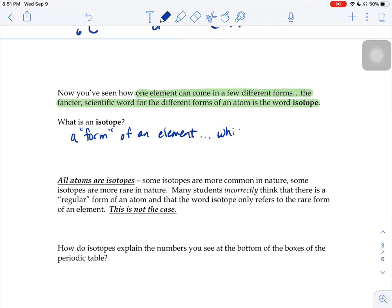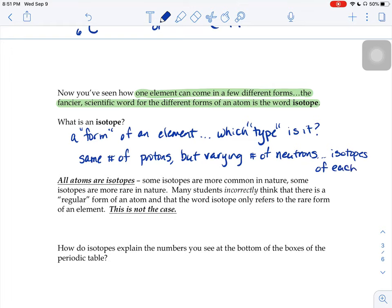It's saying which type do you have, which type is it? Because if there's multiple kinds, you need to know which kind you're talking about. If you have two atoms, and those two atoms have the same number of protons but varying numbers of neutrons, then we could say that they are isotopes of each other, that they are all variations of the same element. Same number of protons, but varying number of neutrons.